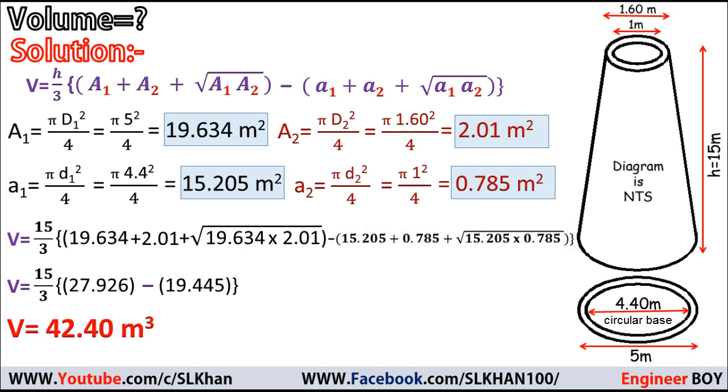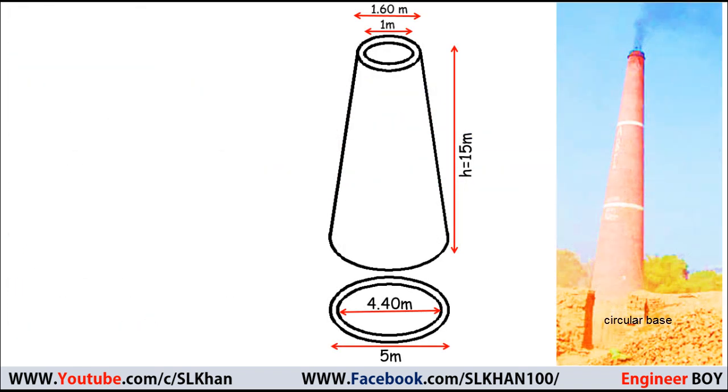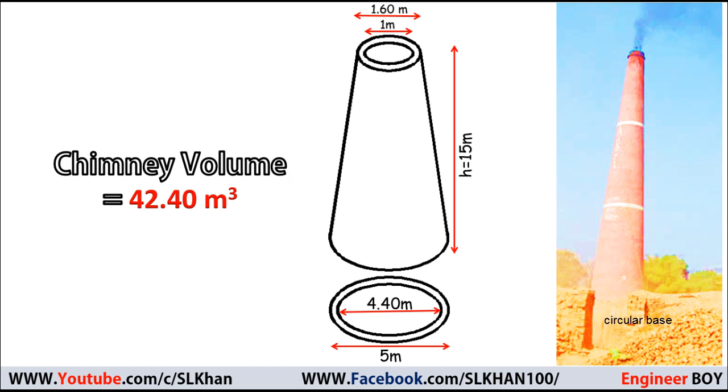By doing a little math, we get the volume of this brick chimney equals 42.40 cubic meters. So finally, the volume of the brick chimney is 42.40 cubic meters, and that's it.